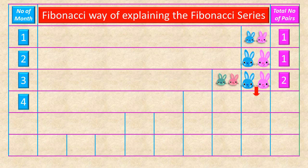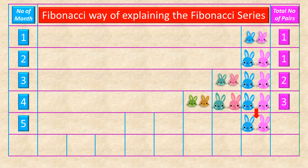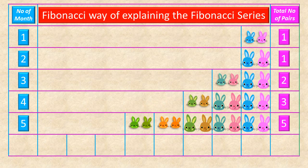During the fourth month, the first pair of rabbits is four months old. The second pair of rabbits is two months old and attains adulthood. The first adult female rabbit again gives birth to a new third pair of baby rabbits. At the end of the fourth month, the total pair of rabbits is three. During the fifth month, the first pair is five months old, the second pair is three months old, and the third pair is two months old and attains adulthood. The first adult female gives birth to a new fourth pair, and the second adult female gives birth to a new fifth pair of baby rabbits. At the end of the fifth month, the total pair of rabbits is five.